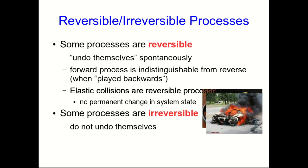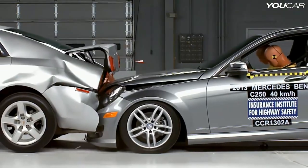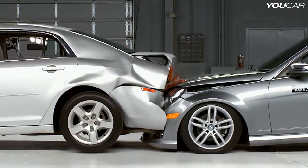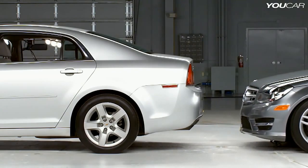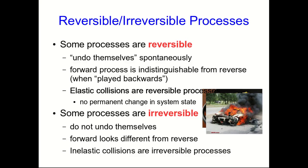This car has been in a very irreversible process. It will not uncrash and be a perfectly fine car again. And for an irreversible process, the forward process looks different from its reverse. So you can tell very clearly that this video of these cars crashing is in reverse. Inelastic collisions then are clearly irreversible processes.